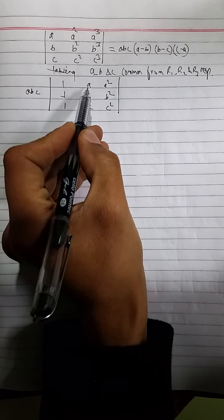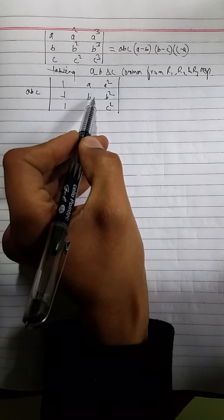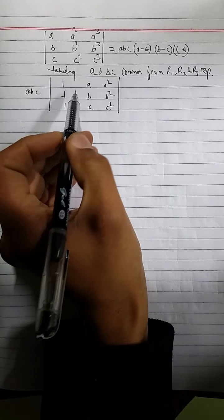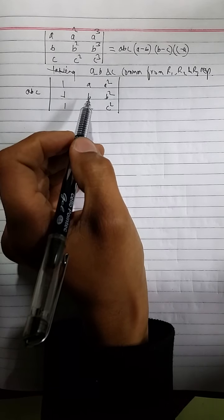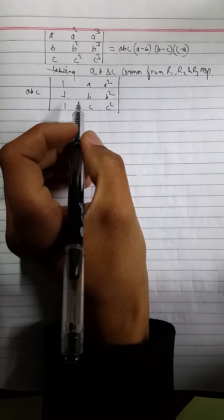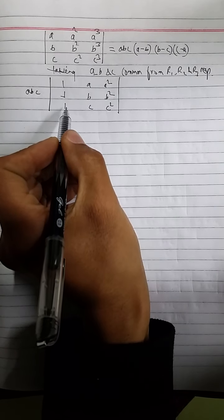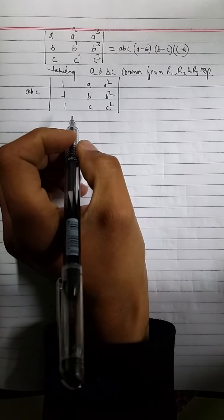If we are about to subtract B from A, that is, if elements of row 2 are subtracted from row 1, we obtain A minus B, A square minus B square, and it will obtain A minus B as a factor. Similarly, we can obtain B minus C factor by subtracting row 3 from row 2. So let's do that.